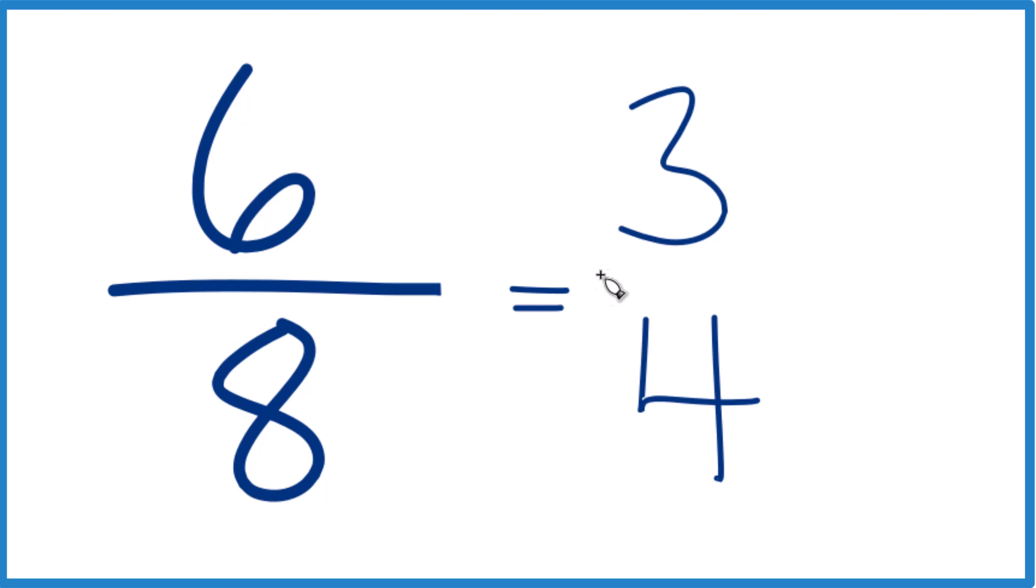And we end up with six-eighths equals three-fourths. And we can't simplify or reduce this any further, so it's in lowest terms.